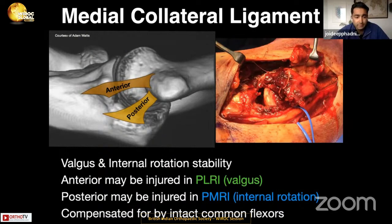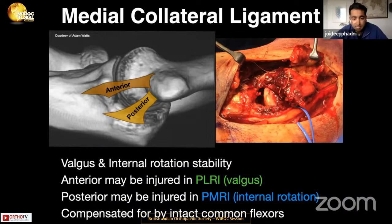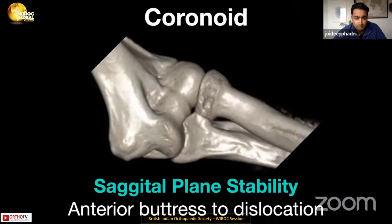The medial collateral ligament is responsible for valgus stability and internal rotation. The internal rotation stability comes from the posterior part of the MCL, and valgus stability from the anterior part. The anterior part tends to be ruptured in posterolateral instability patterns, and the posterior part in posteromedial patterns. We often don't need to fix the MCL because the common flexors are intact and compensate well, unless they are also avulsed.